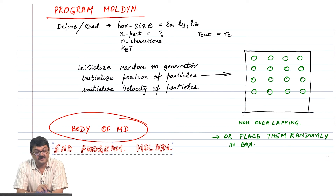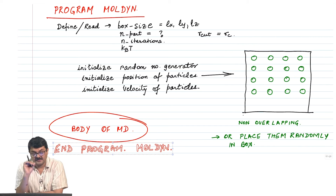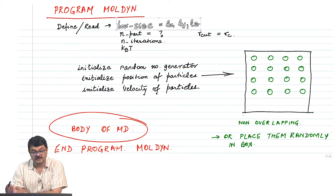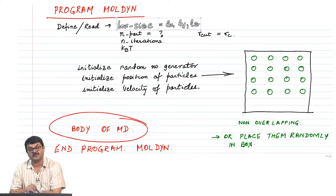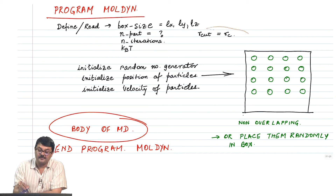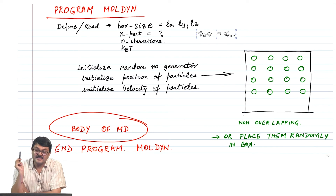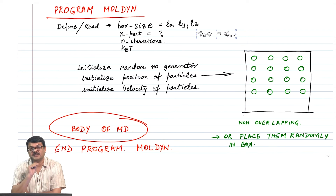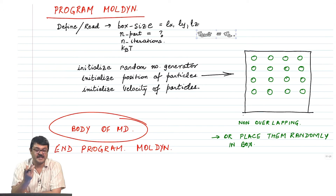Here is essentially the body of the code — the program 'mold_in' starts and ends here. But before that, we have to define suitable variables. These can be read from screen input or from a small separate file. You must define Lx, Ly, Lz — typically for a start you can choose a cubic box so Lx equals Ly equals Lz. You have to choose n_part, the number of particles, and R_cut or R_c, the cutoff distance of the potential.